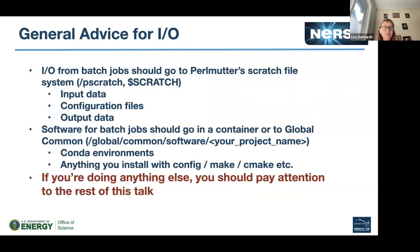This talk is about DVS. The general advice for IO at NERSC: if you're running a batch job, you should go to the Perlmutter scratch file system — you're going to get the fastest rates and the fastest network paths, optimized for reading and writing from compute nodes. That means input data, configuration files, output data — if you're doing a lot of IO, your best bet is to put this on scratch if you can.